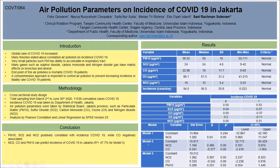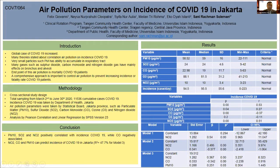According to the linear regression in Model 3, NO2, CO, and PM10 can be used to predict the incidence of COVID-19 in Jakarta. In conclusion, PM10, SO2, and NO2 are positively correlated with the incidence of COVID-19, while carbon monoxide is negatively associated. NO2, CO, and PM10 can predict COVID-19 incidence in Jakarta, with a coefficient of determination of approximately 47.7% for Model 3. This is the end of my presentation. Thank you very much.